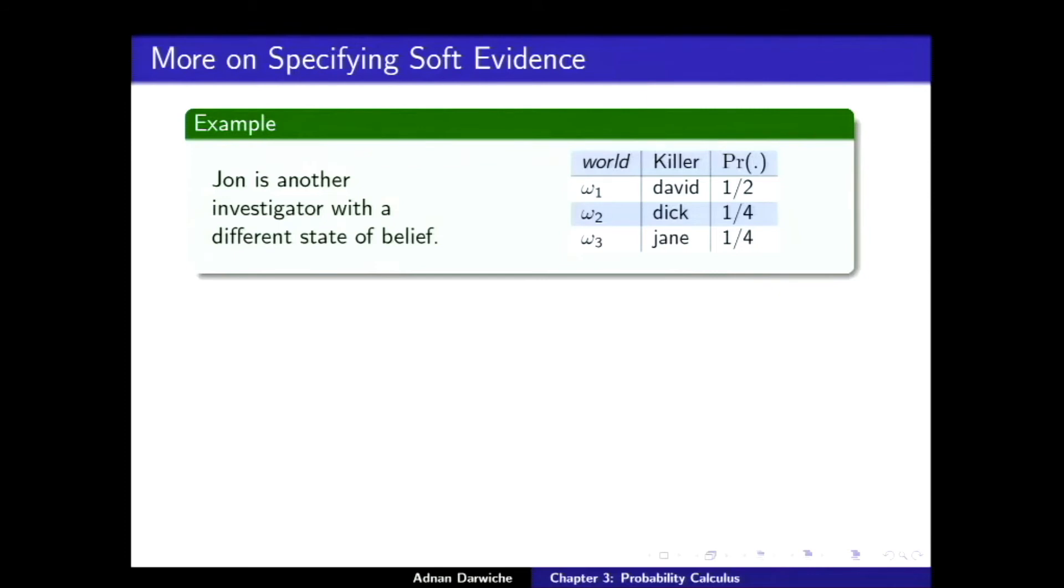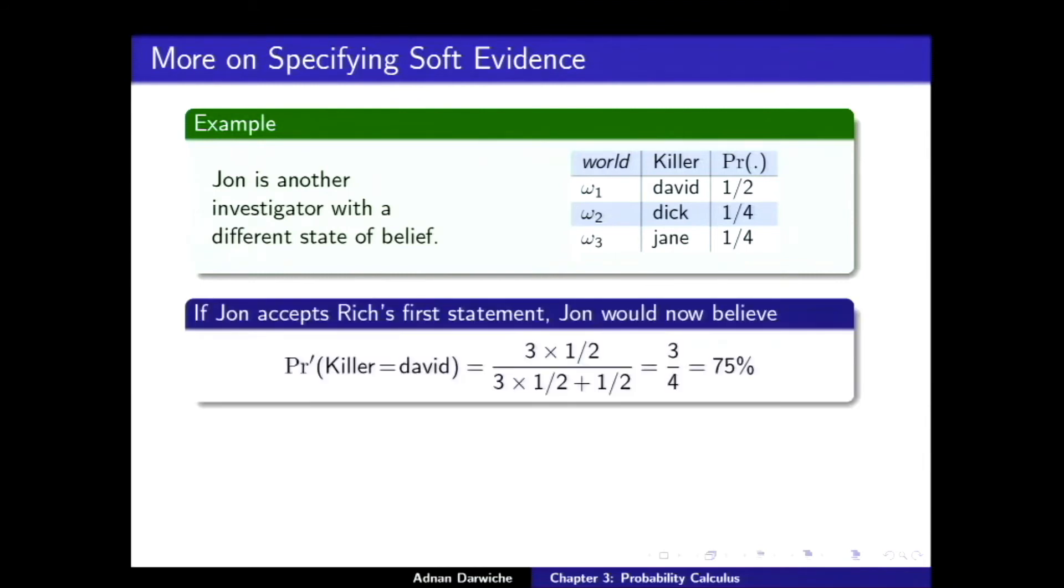John is the other investigator and has a different state of belief. He thinks that David the killer is 50% only. Not two-thirds. And, if John accepts Rich's first statement, which is that triples the odds, and you update what it's going to get, the probability of David being the killer now is 75%. So, what happened here is the same evidence that tripled the odds of David being the killer, raised the belief of Rich from 67 to 86, but John's from 50 to 75. Does that make sense? If they communicate to you 75 and 86, that's mixing both strength of evidence and initial belief.